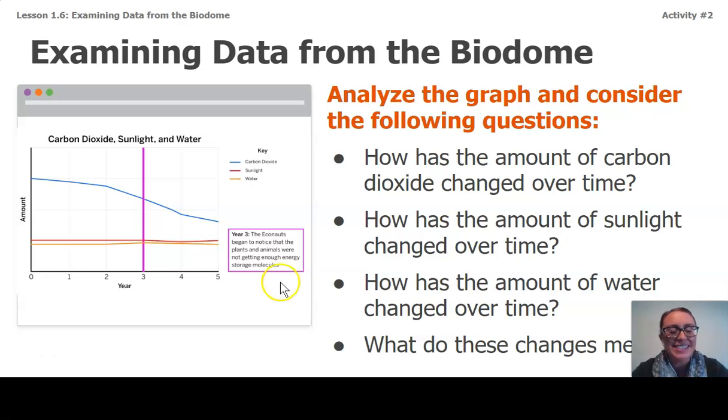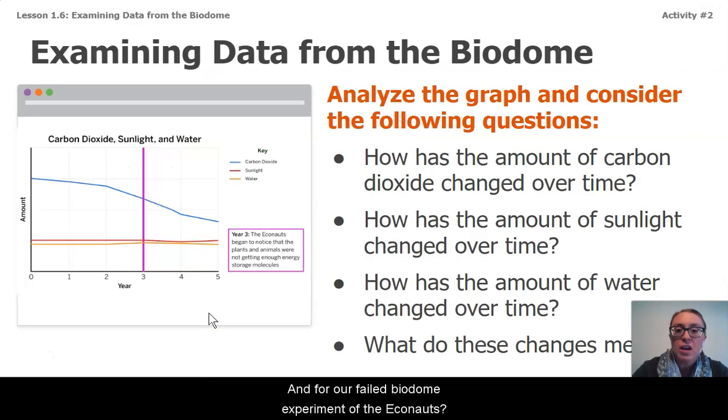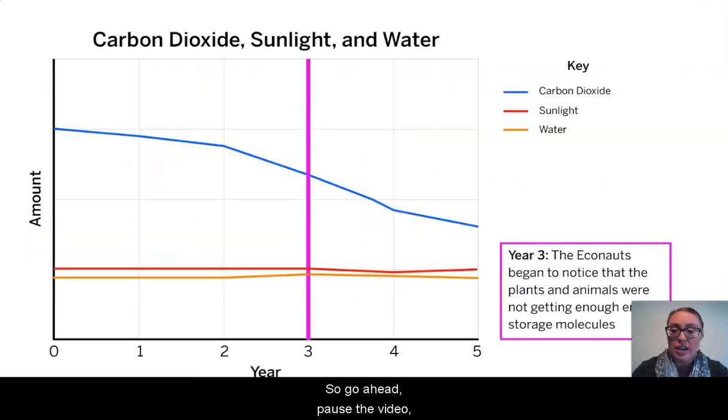So in a moment, I'm going to ask that you pause the video and I'm going to make our data nice and big so that you can see it. And I want you to analyze this graph and consider these following questions. How was the amount of carbon dioxide changed over time? How was the amount of sunlight changed over time? How was the amount of water changed over time? And what do these changes mean for our claims and for our failed biodome experiment of the Econauts? So go ahead, pause the video. There's our graph a little bit larger.